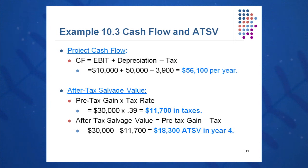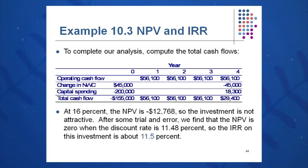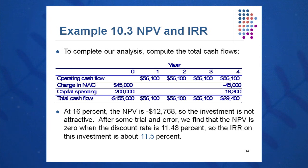Laying this out using OCF minus NCS minus CNWC to get cash flow from assets: the equipment costs $200,000 today, but we save $45,000 in net working capital due to more efficient inventory management, so net cash outflow at time zero is negative $155,000. OCF of $56,100 comes in each year for four years. In year four, net working capital reverses to negative $45,000 and after-tax salvage adds $18,300. Discounting at 16%, NPV is negative $12,768, so we reject this project.